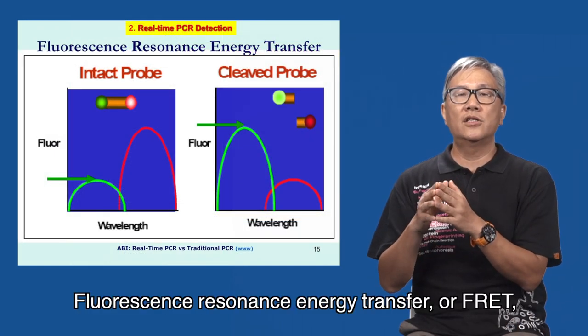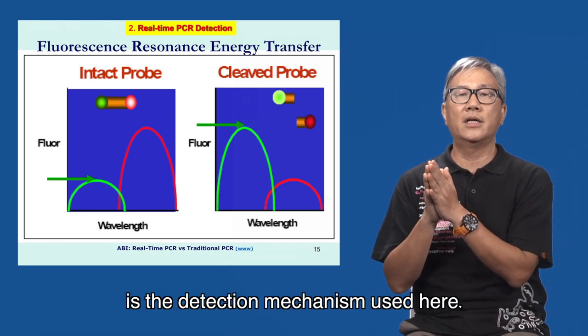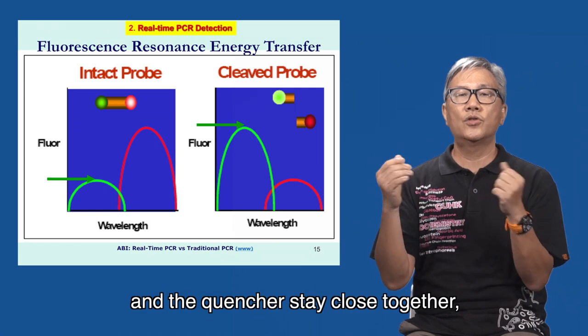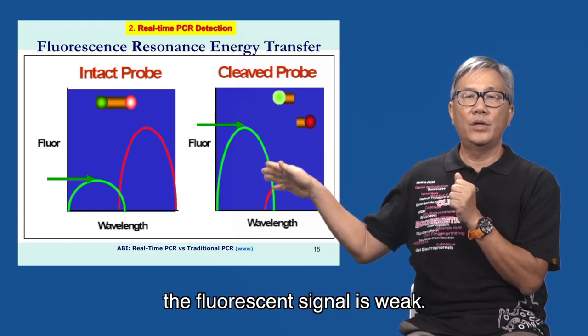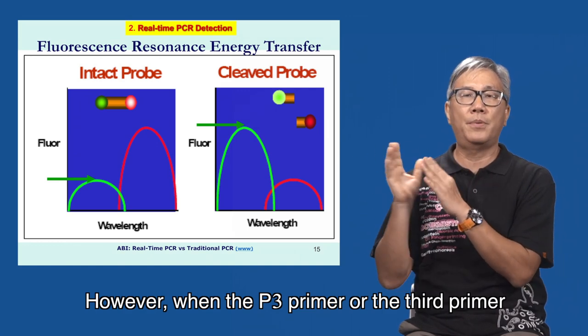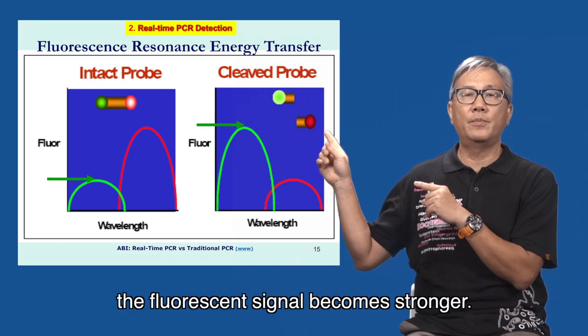Fluorescence resonance energy transfer or FRET is the detection mechanism used here. When the reporter dye and the quencher dye are close together, the fluorescent signal is weak. However, when the P3 primer or the third primer is cleaved in the middle of each cycle, the fluorescent signal becomes stronger.